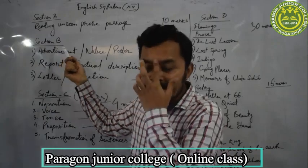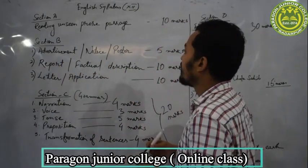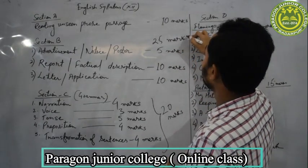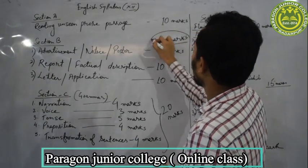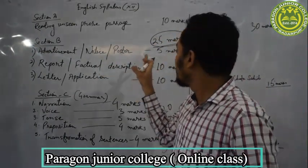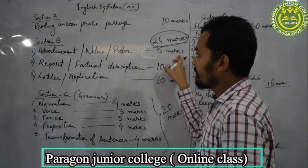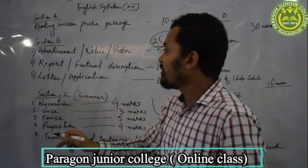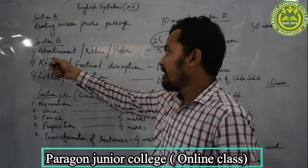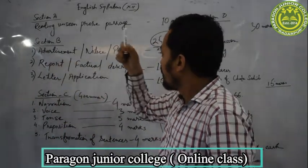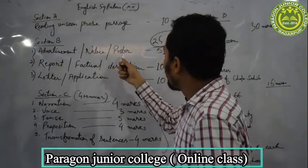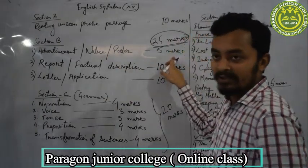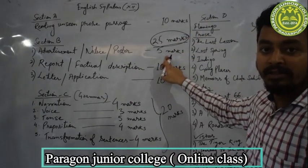Coming to Section B — Section B is very interesting and this unit consists of 25 marks in total. There are three subdivisions in Section B. In the first division you will have advertisement writing, notice writing, and poster design. These three topics consist of 5 marks. This topic is very easy as well.